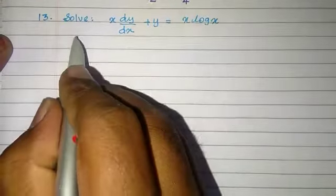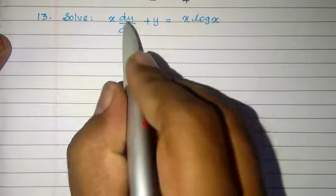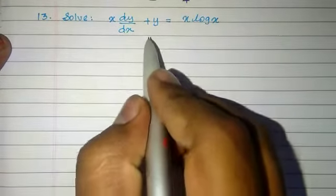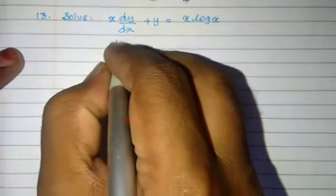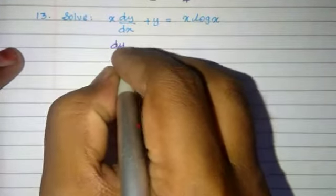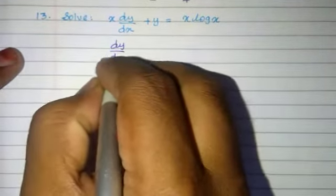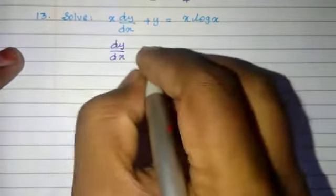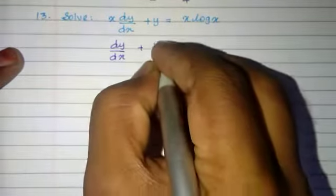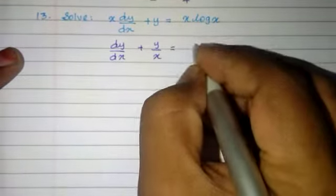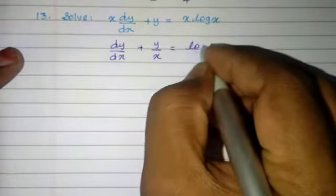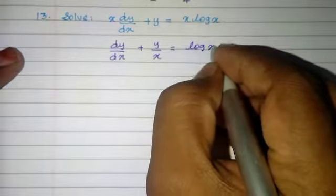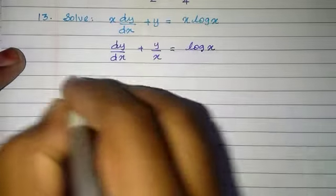Problem 13, solve: x into dy/dx plus y equal to x log x. Dividing by x on both sides, we get dy/dx plus y/x equal to log x.